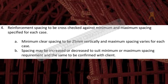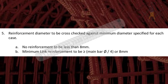Point 4. Reinforcement spacing to be cross-checked against minimum and maximum spacing specified for each case. Minimum clear spacing to be 25 mm vertically and maximum spacing varies for each case. Spacing may be increased or decreased to suit minimum or maximum spacing requirement and the same to be confirmed with client.